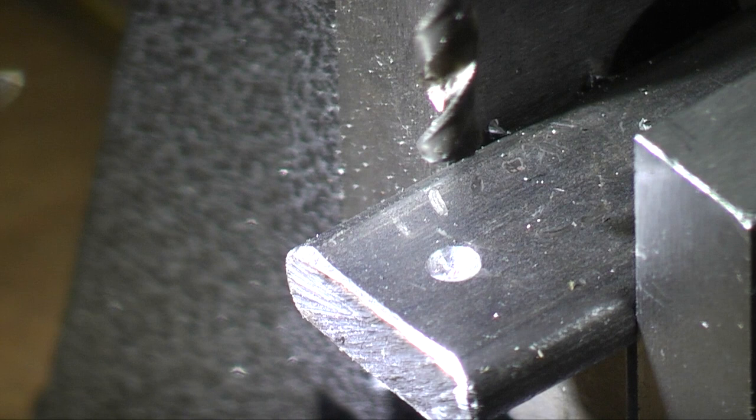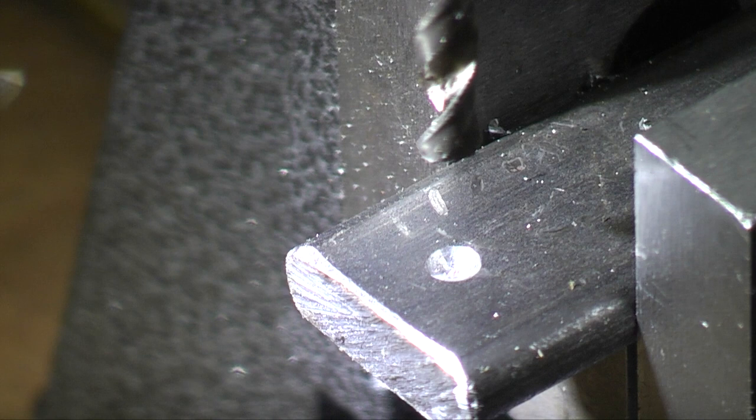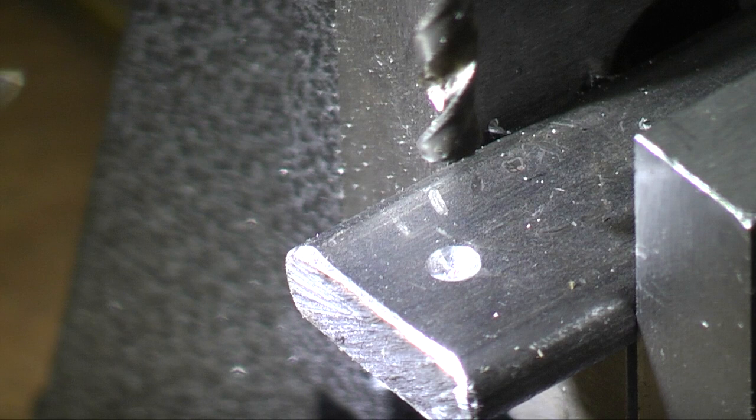So I'll just use a spot drill just to mark where I want to drill a hole. I'm drilling a 4mm hole. Then we'll fit the boring cutter on the milling machine and see how it bores.